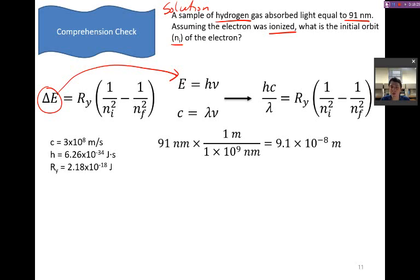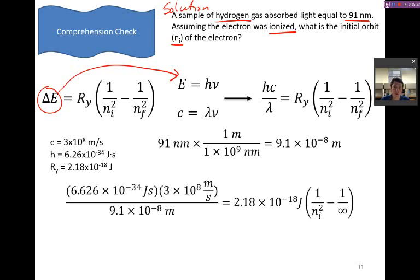So we would need to convert our wavelength into meters. We can plug in our values. We have Planck's constant, the speed of light, and our wavelength here. That's equal to the Rydberg constant times one over n initial squared minus one over n final squared. And you'll notice here I've put in a value of infinity for our n final. Remember that ionization is what happens when you take the electron and you separate as far as possible from the nucleus. And so we've defined that as an n state of infinity.